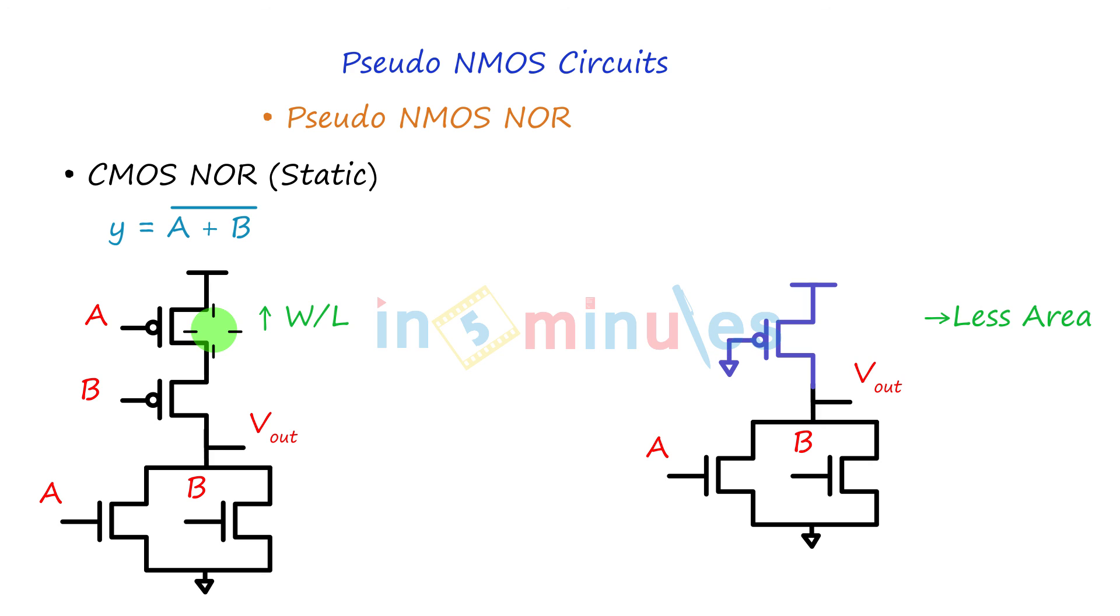Whenever any transistor is slow and if you want to make it fast, how to make a slow transistor fast? Increase W by L. Is it logical? Yes. Because ID is proportional to W by L. So if W by L is increased, my ID will increase. If current flow is increased, then my transistor becomes fast. So the W by L of this has to be increased tremendously, which will cost a lot of area. Whereas here, it will be less area because there is only one PMOS.